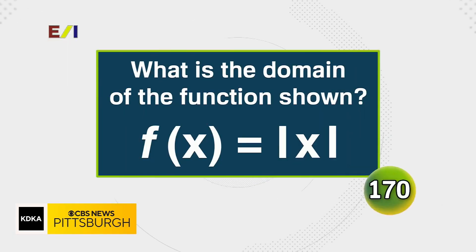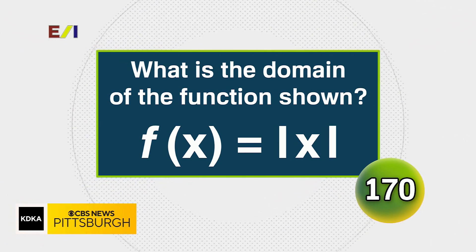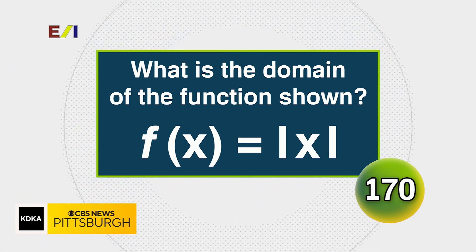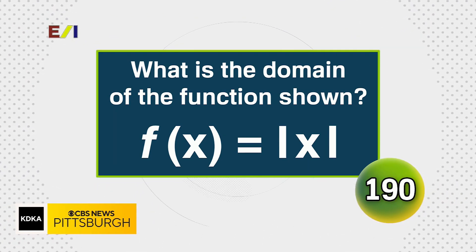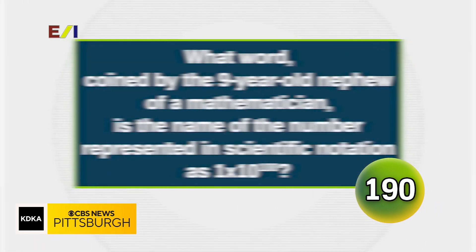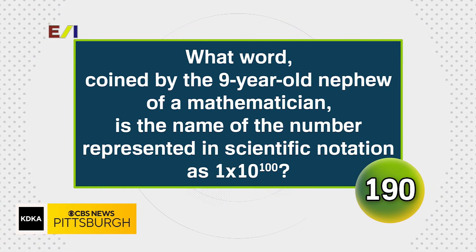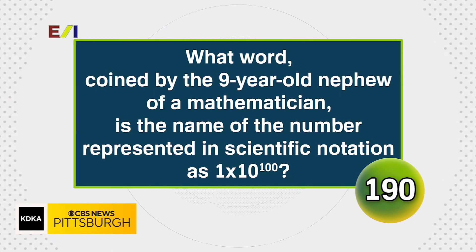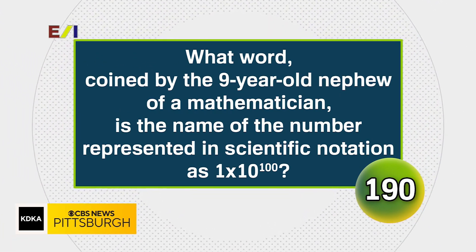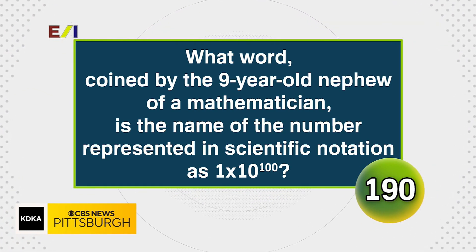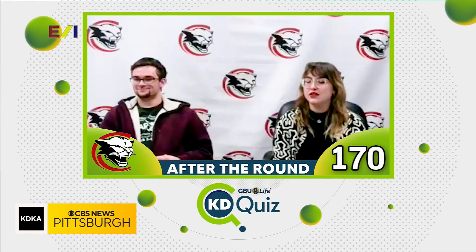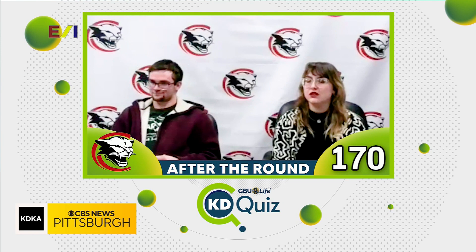Next up is our team from Charleroi. Here is your first Math Time question, Charleroi. What is the domain of the function shown? Zero to positive infinity. All real numbers is correct — nicely done. What word, coined by the nine-year-old nephew of a mathematician, is the name for the number represented in scientific notation as 1 times 10 to the 100th? 3 trillion. Nice try, but a googol was what we were looking for. You got one right and one wrong, so your score remains the same at 170 points.